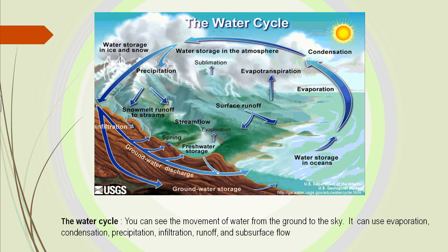Subsurface flow refers to underground streams. We all know about the Ogallala area, going from the Dakotas all the way down to Texas. This is a large area of water with trillions of gallons that farmers are using to keep Midwest corn and wheat growing.